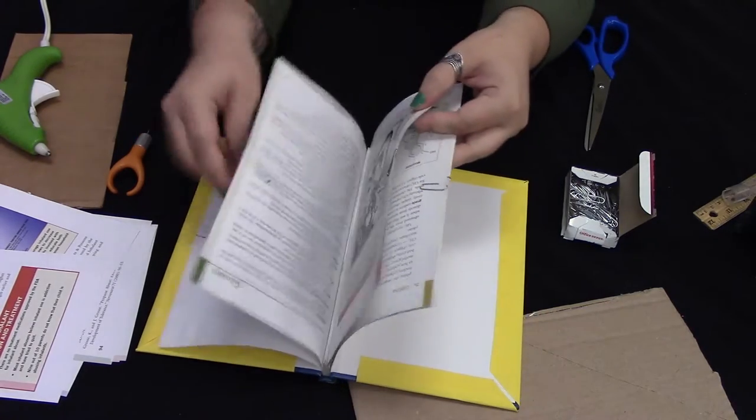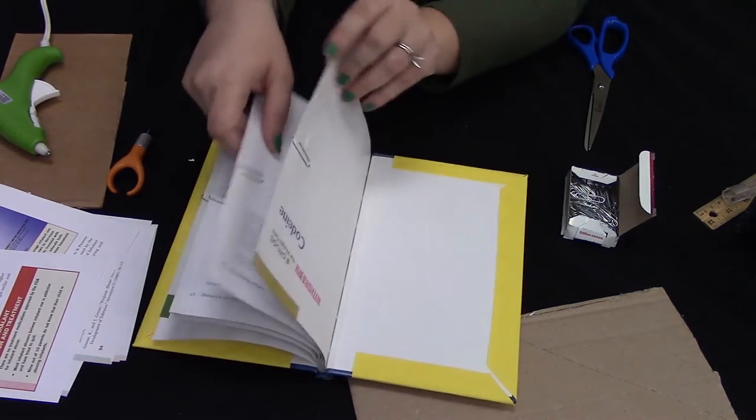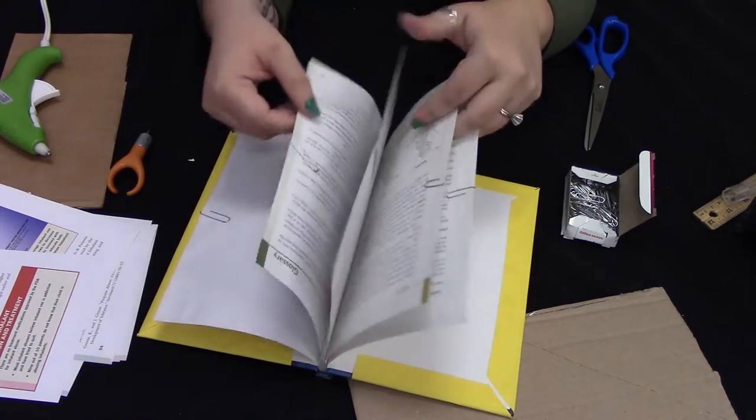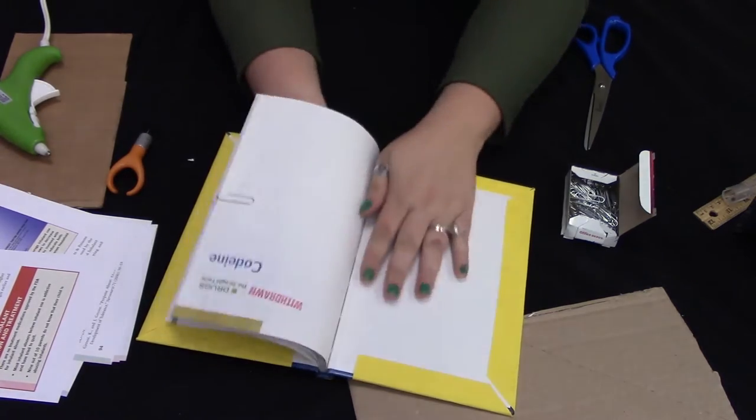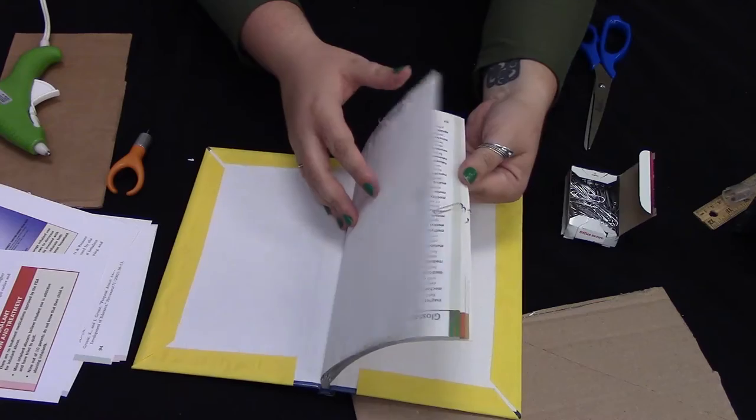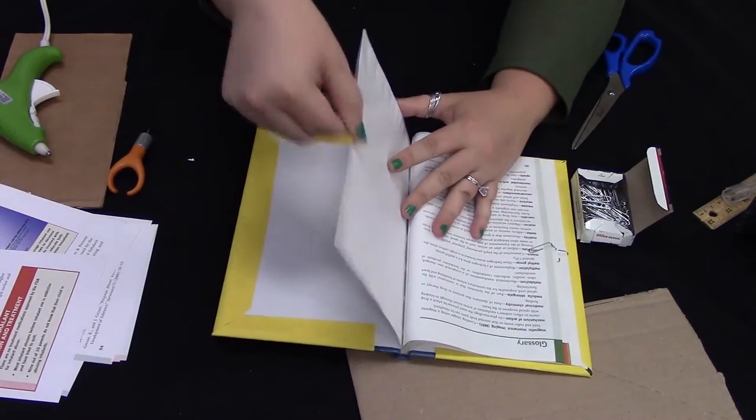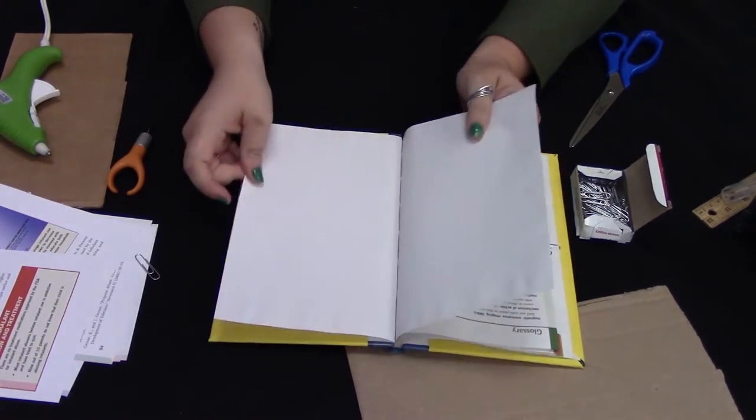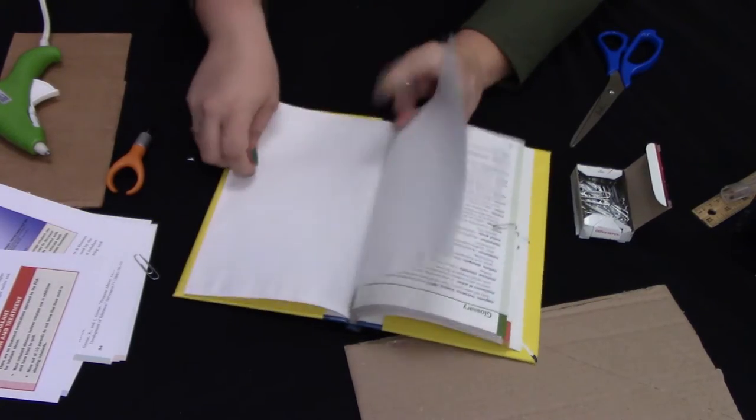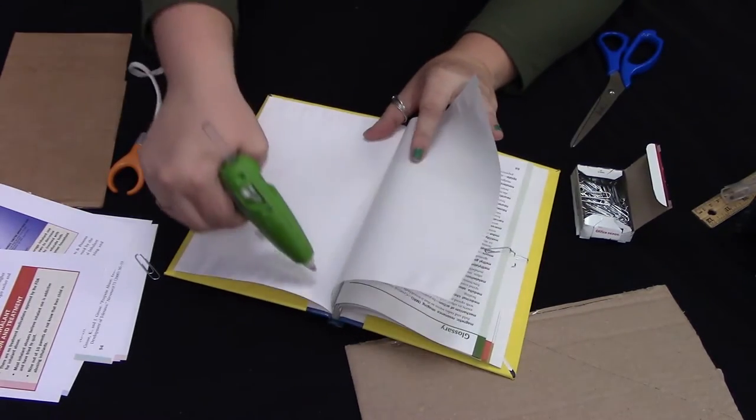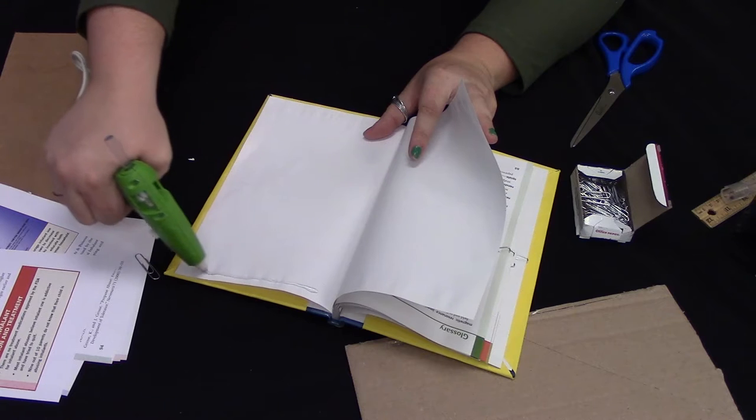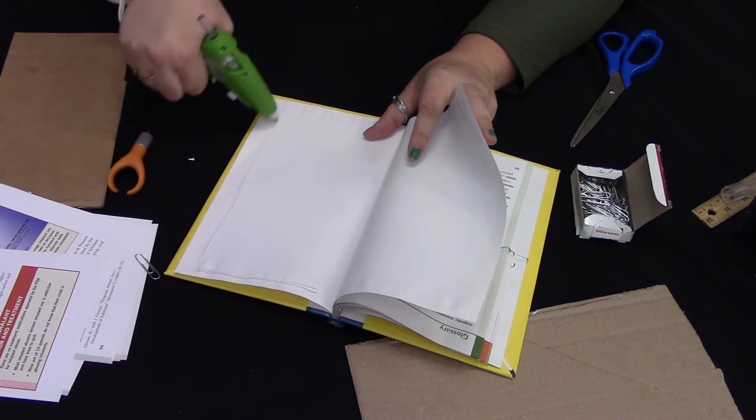So I've got one, two, three, four, five sections of paper clipped pages together. And I am going to take the first one, unpaperclip it, and glue those two pieces of paper together. This just helps reinforce the pocket portions of our folder.